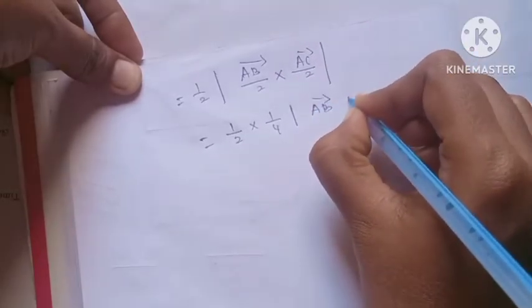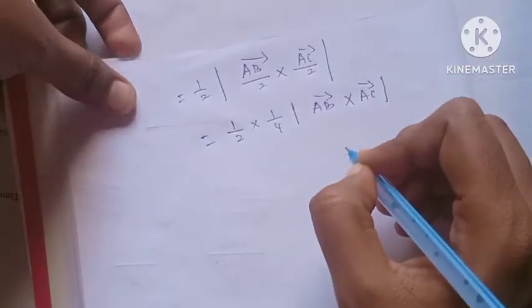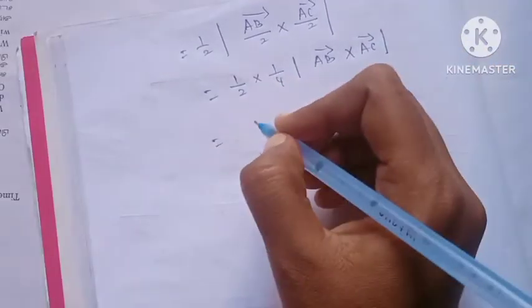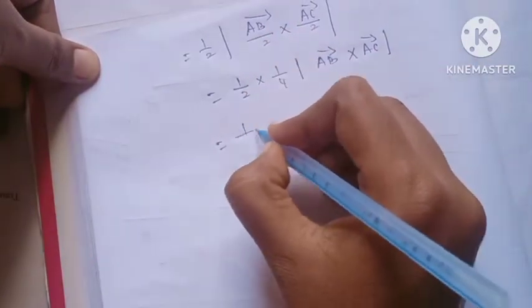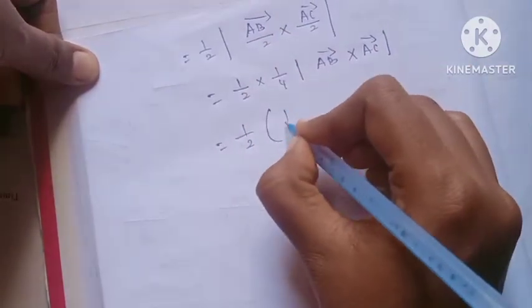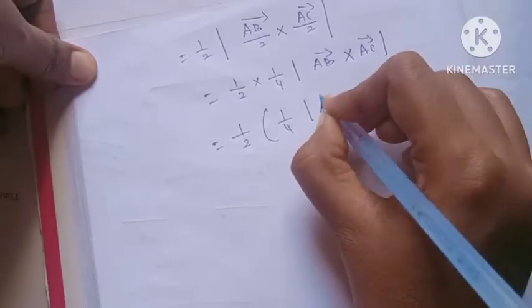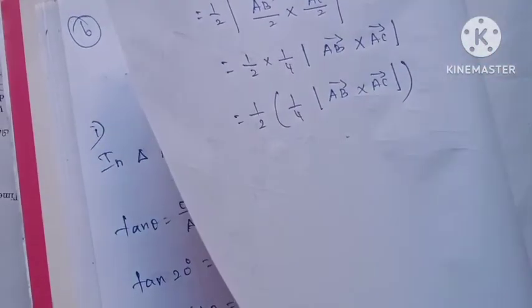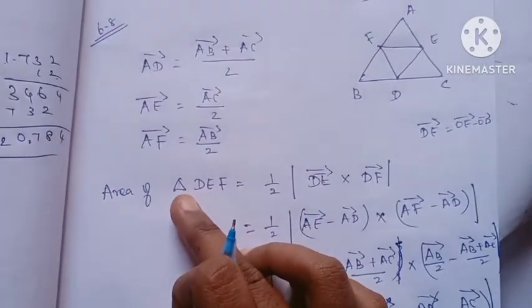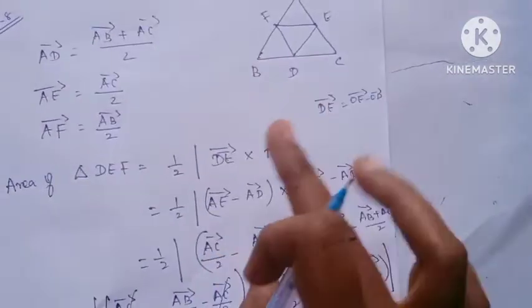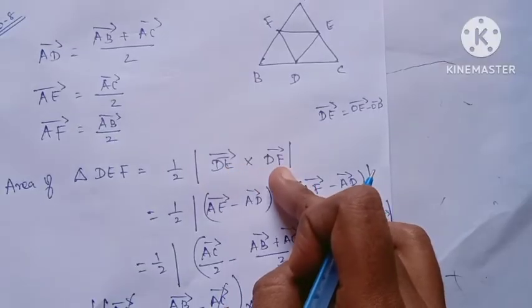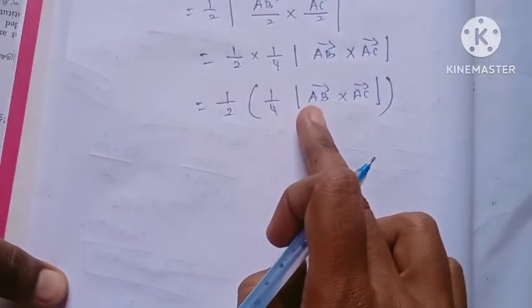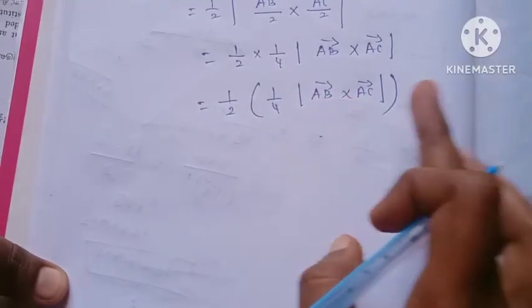So we have AB vector cross AC vector. Area of Triangle DEF = (1/2)|DE cross DF| = (1/4) modulus of AB vector cross AC vector.